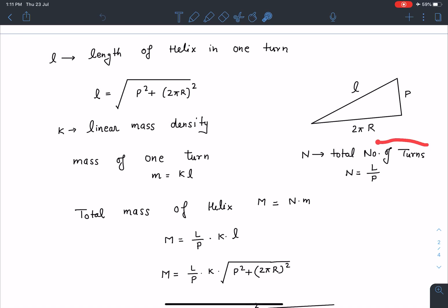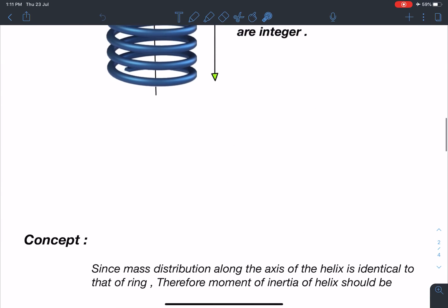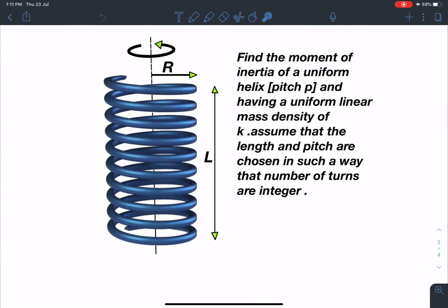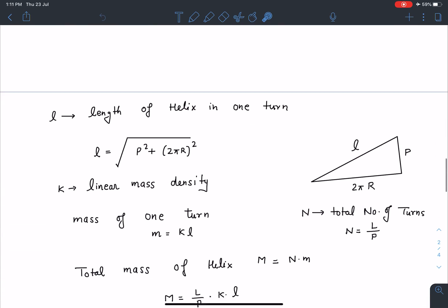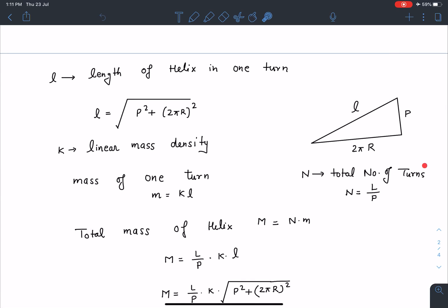Now somehow if I can calculate the total number of turns, I'm going to get the answer for my question. So from here you can say number of turns will be total length of the helix divided by this uniform pitch P and we are set to go. So the total number of turns in this case is L by P.